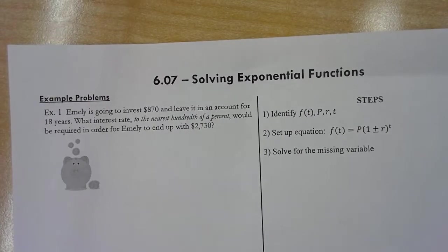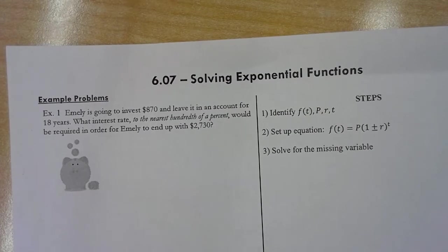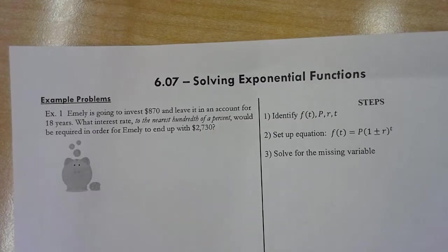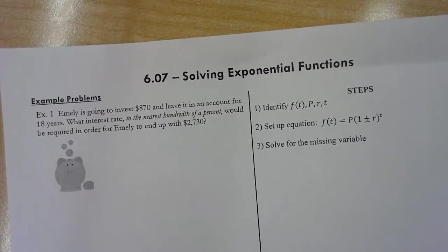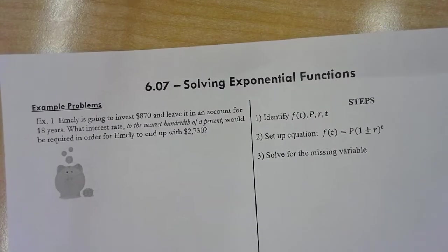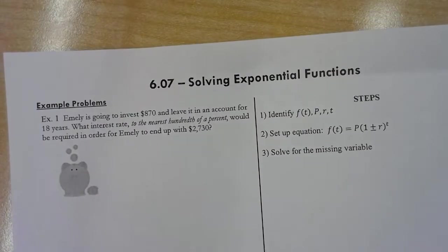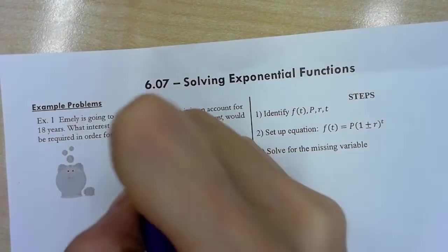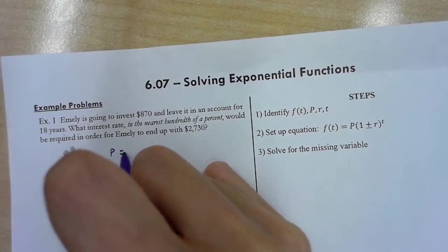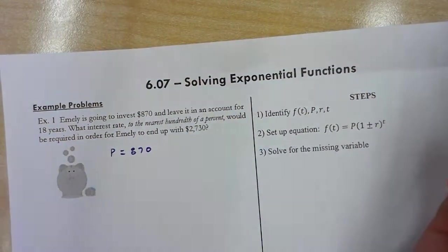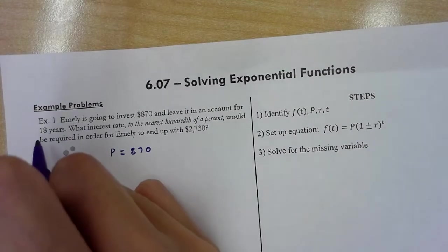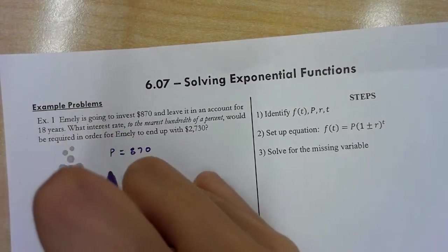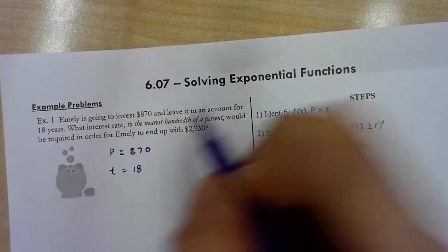Example 1: Emily is going to invest $870 and leave it in an account for 18 years. What interest rate, to the nearest hundredth of a percent, would be required in order for Emily to end up with $2,730? So we're going to start annotating and identifying what the given information is. She's going to invest, so that is the initial amount, and then she's going to leave it in an account for 18 years.